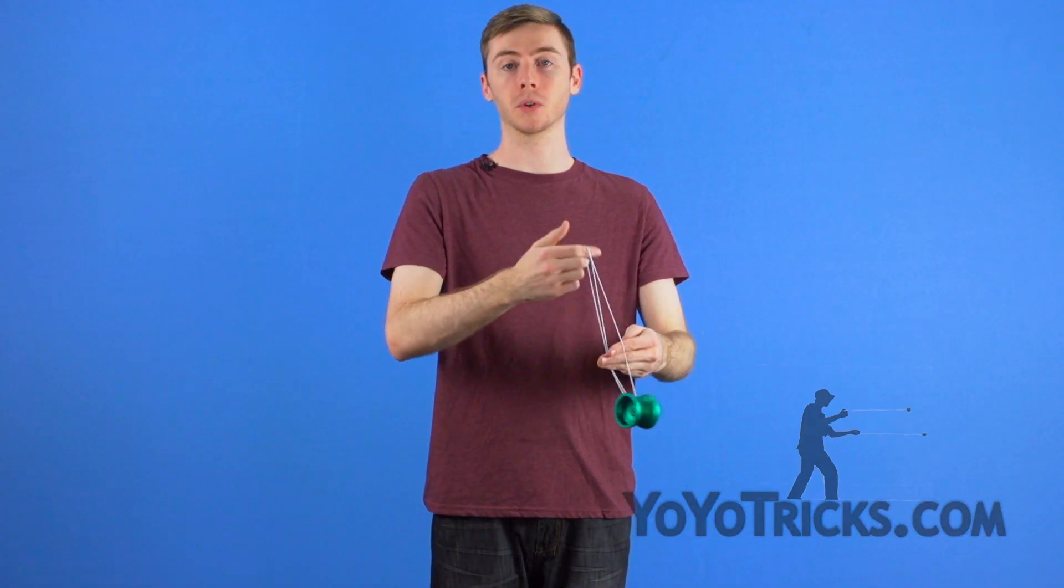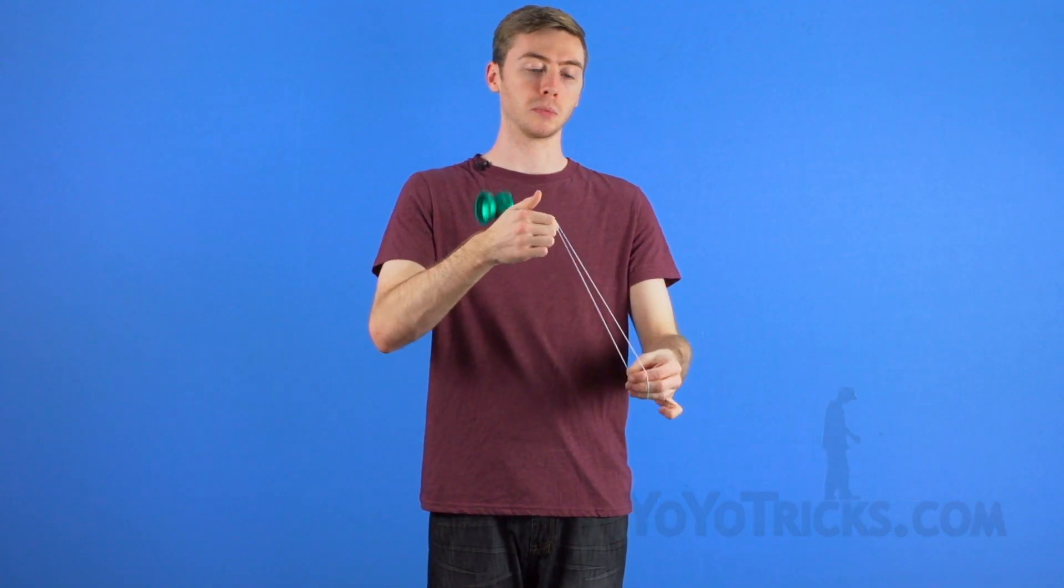This is the fifth video in the Front Style Speed Combo Tutorial Series. I'll be teaching you the concept of boings from the split bottom mount.